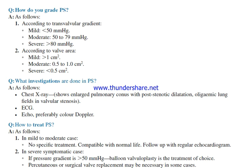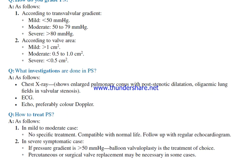What investigations are done in pulmonary stenosis? Chest X-ray shows enlarged pulmonary conus with post-stenotic dilatation and oligaemic lung fields in valvular stenosis. ECG and echocardiography, preferably with colour Doppler. For treatment: in mild to moderate cases, no specific treatment is needed — compatible with normal life; follow up with regular echocardiogram. In severe symptomatic cases where pressure gradient is more than 50 mmHg, balloon valvuloplasty is the treatment of choice. Percutaneous or surgical valve replacement may be necessary in some cases.